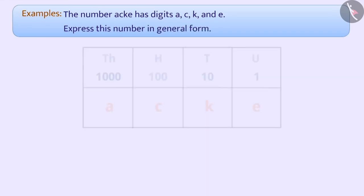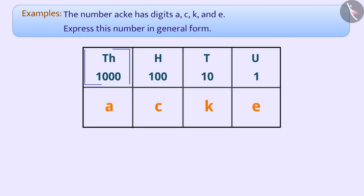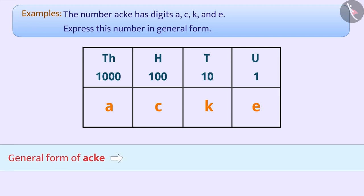In this number, a is in the place of thousand, c in the place of hundred, k in the place of ten, and e is in the place of units. Therefore, this number can be written in its general form as 1000×a + 100×c + 10×k + 1×e.